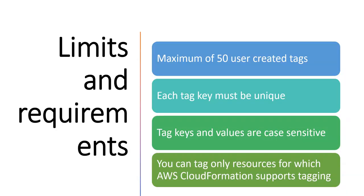Regarding tag limits and requirements: for each resource you can have a maximum of 50 user-created tags. Some resources also have tags starting with the prefix 'aws' that are created by AWS for its own use — these do not count toward the limit, and you cannot edit or delete them. Each tag key must be unique, and tag keys and values are case-sensitive. You can only apply tags to resources that support tagging. Tag key length is 1 to 128 characters, and tag value length is 0 to 256 characters.